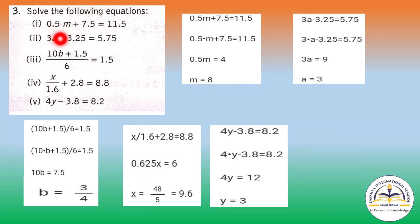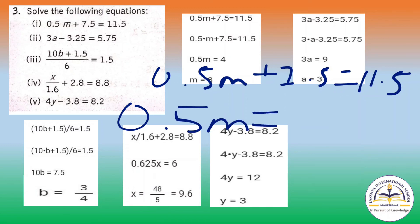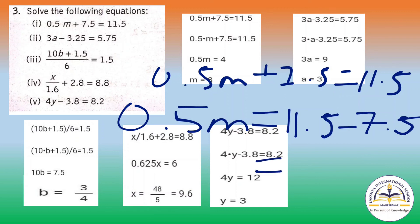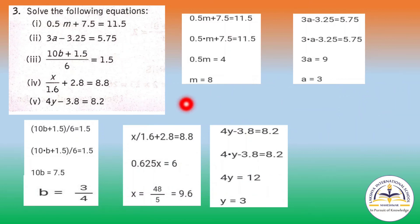Now question number 3, solve the following equations. First: 0.5m plus 7.5 equals to 11.5. Now we will subtract 7.5 from 11.5, you will get 4. Now m equals to 4 by 0.5, that is 40 by 5, you will get 8. So m equals to 8 will be the answer.